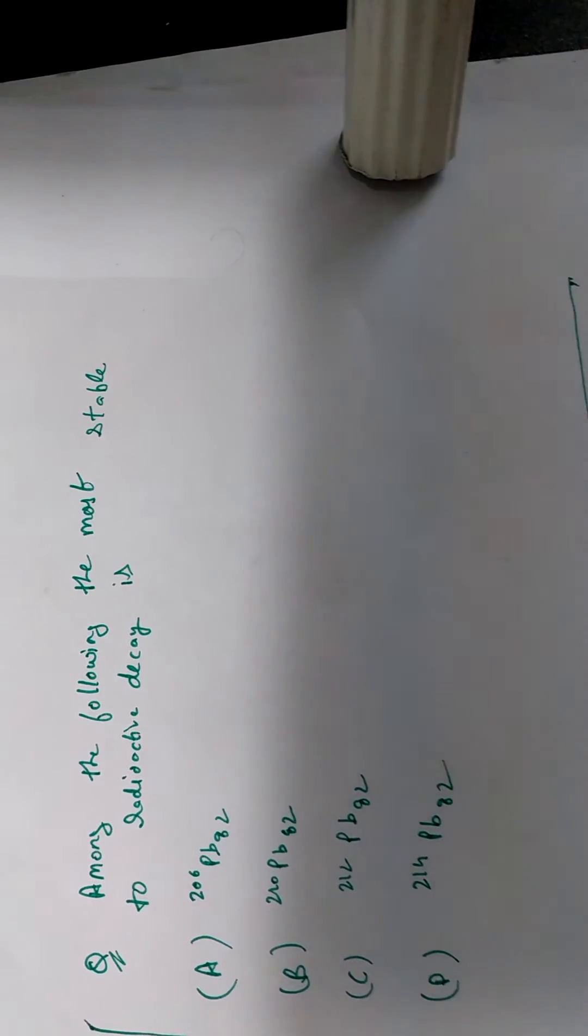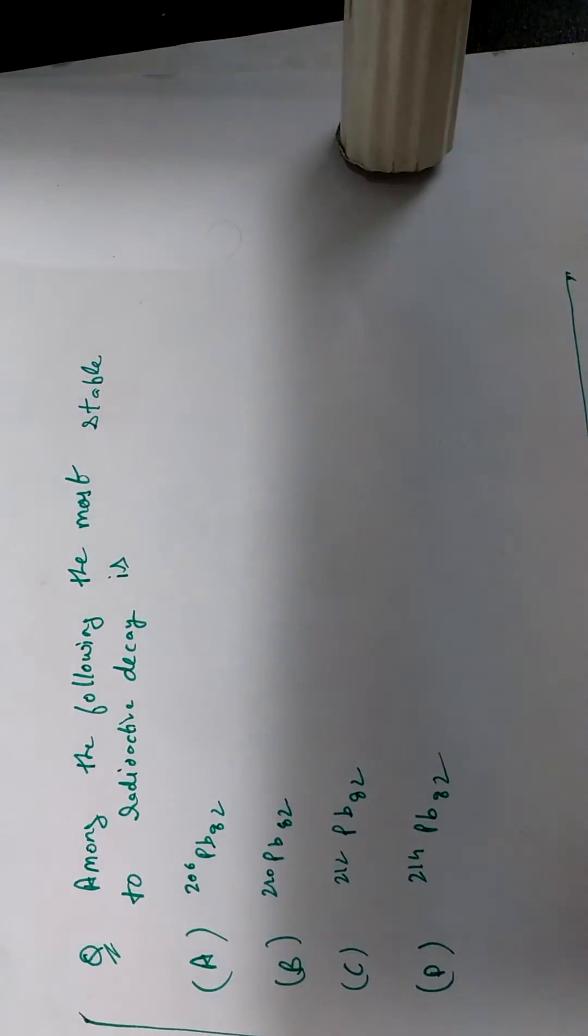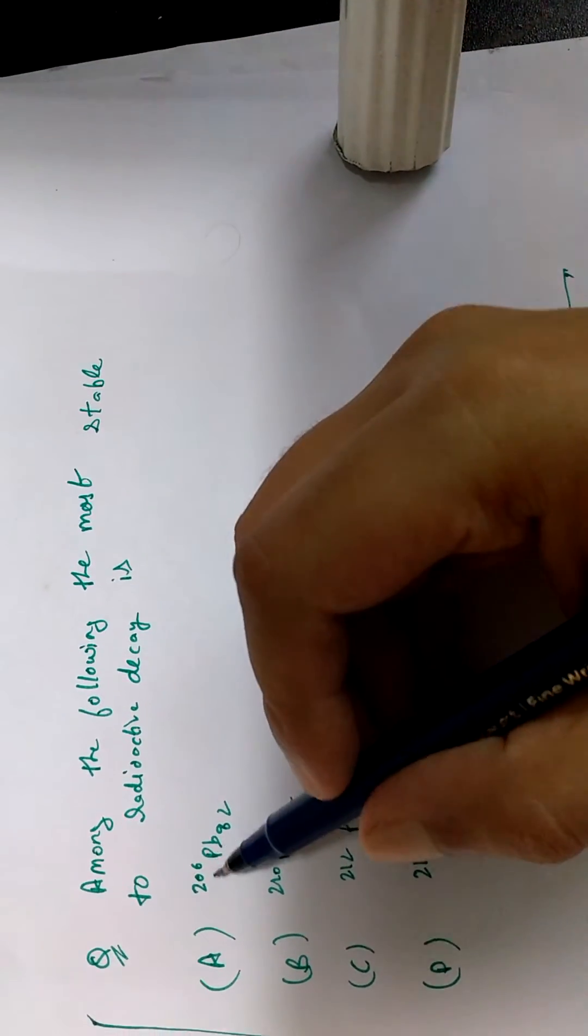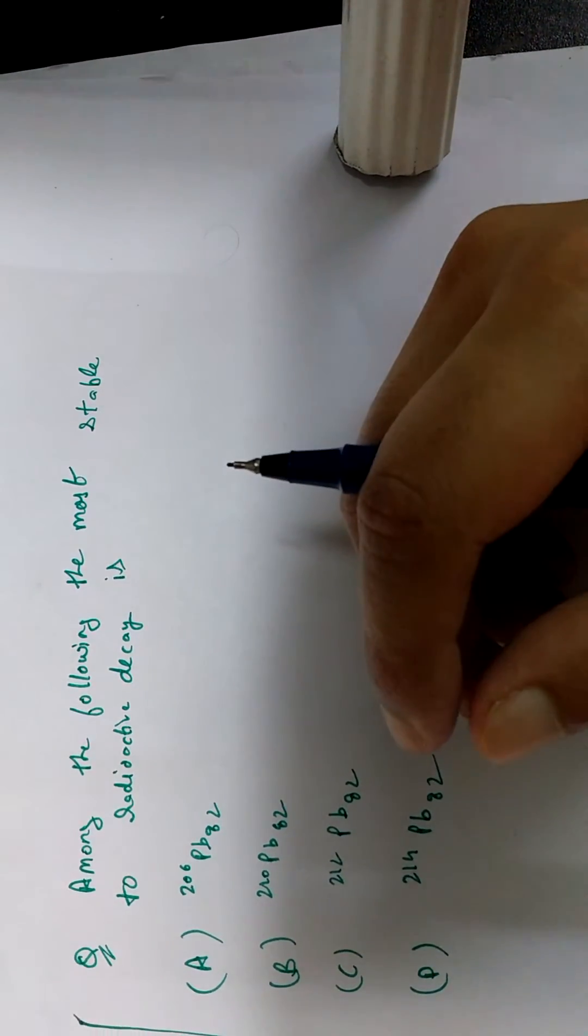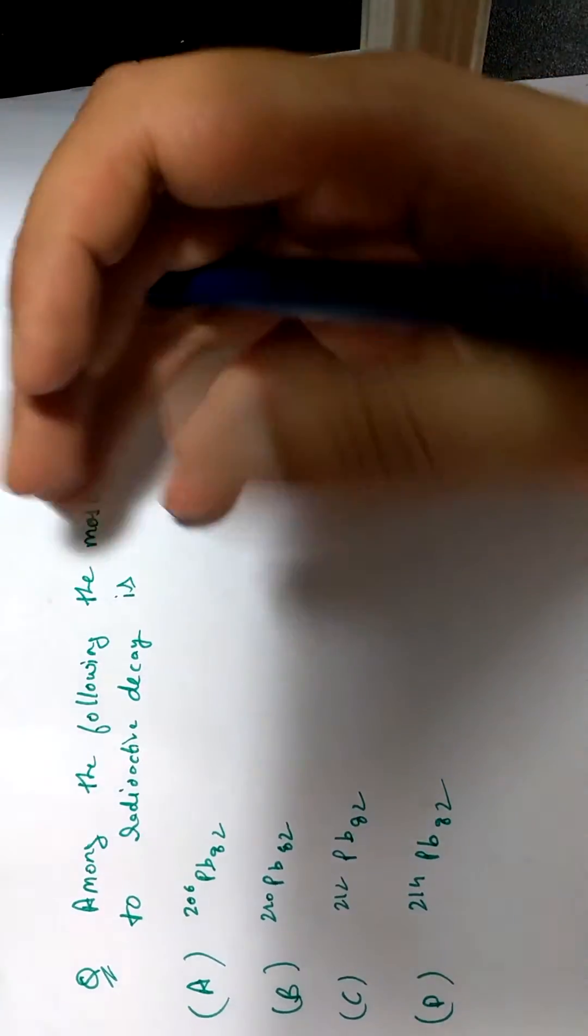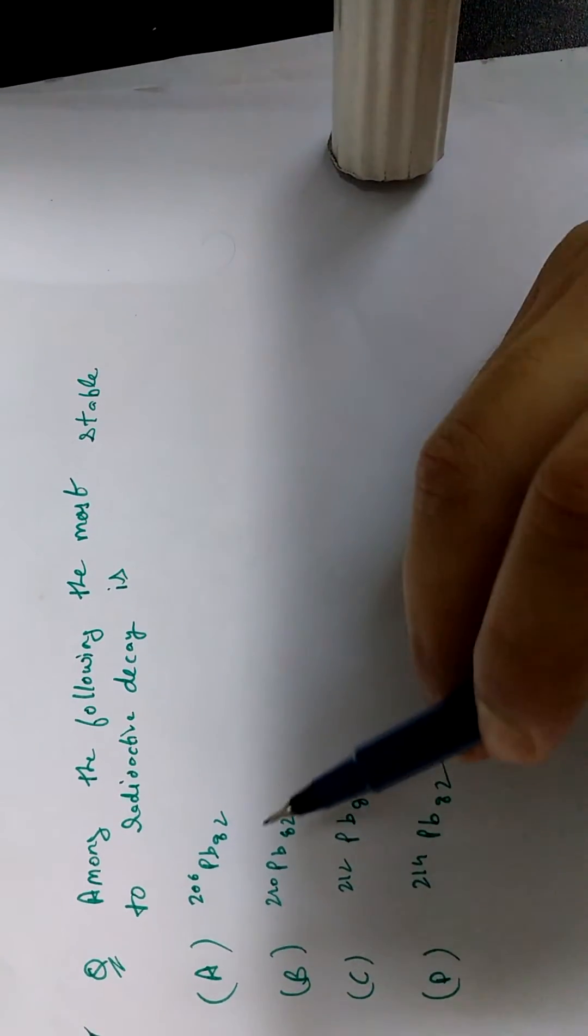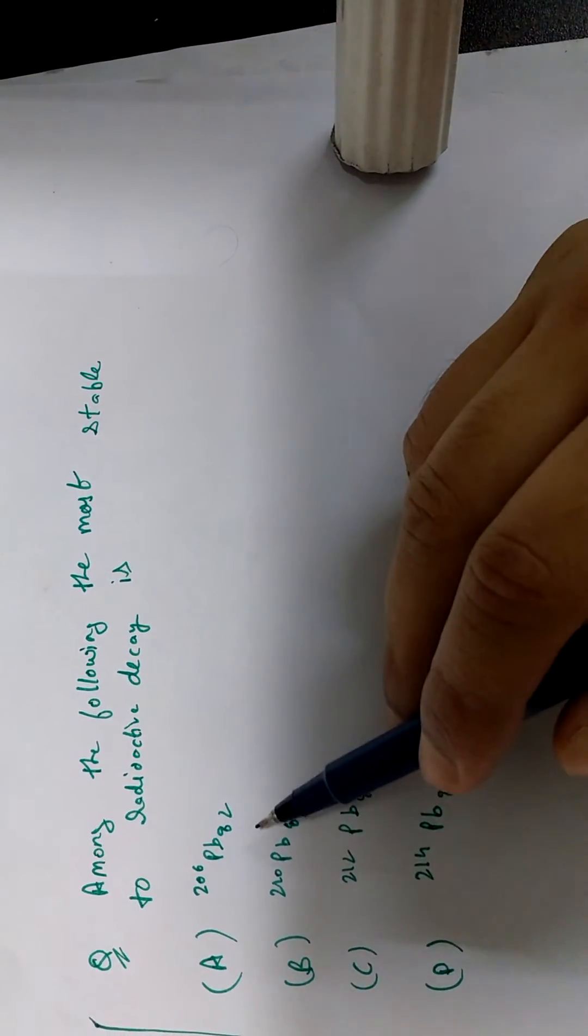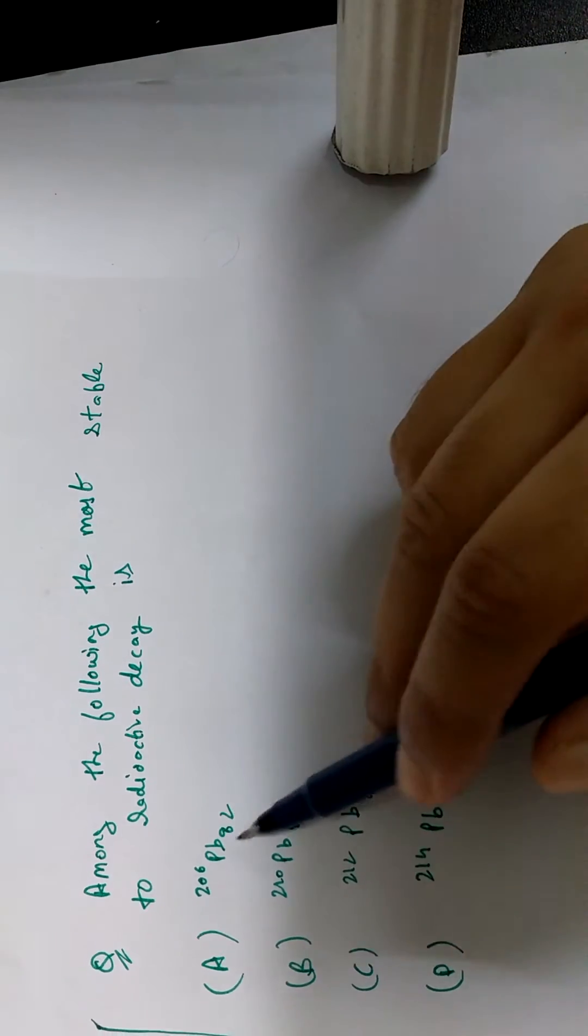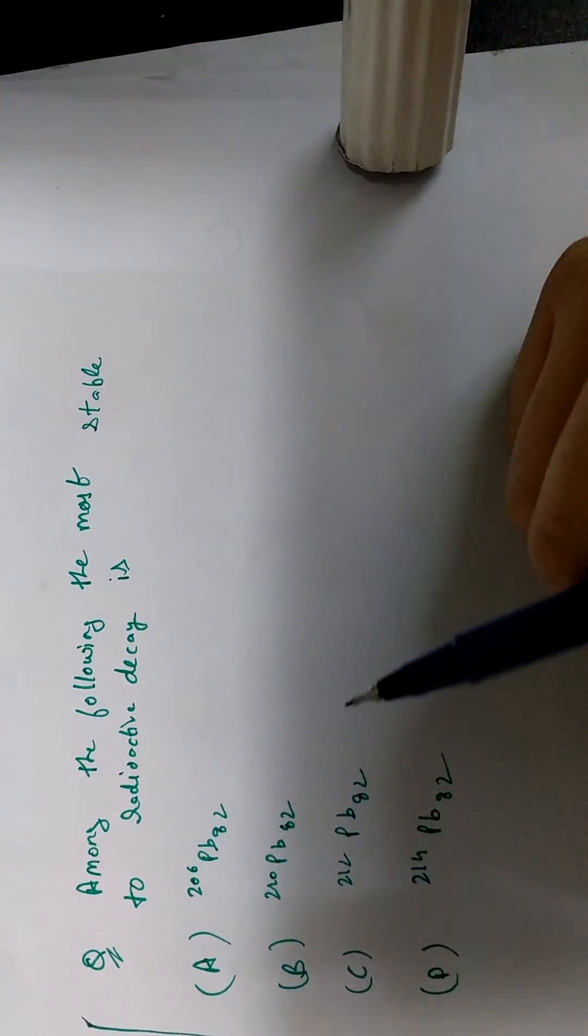So how do you solve them is that we need to know firstly that this 206 over here, this is the atomic mass of an element and atomic mass is equal to the number of protons plus neutrons. That is very basic, right? And this is the atomic number which represents the number of electrons present in the element.